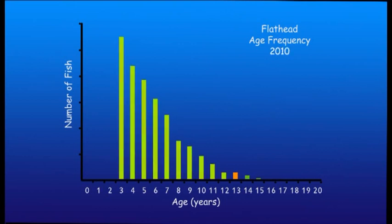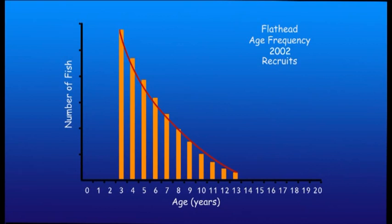If we isolate the 2002 recruits and look at the change in their population over the following years, our graph looks like this. Here we have the total number of fish at each age, and as you can see over the period the number of each age class falls. This is called a catch curve, and represents the total number of fish dying each year.